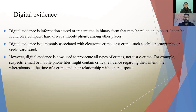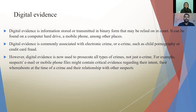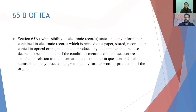For suspects, emails or mobile phones and files might contain critical evidence regarding their intent, their whereabouts at the time of the crime, and their relationship with other suspects. Taking the example of a mobile phone, our personal messages, email chats, or any social group chat are all stored there. By seizing a mobile phone, we could access the data of any user, and if a crime has been committed, we can find data related to the crime or identify suspects from messages, phone calls, or tower location. Section 65B of the Indian Evidence Act says how these digital evidences are admissible in the court of law.